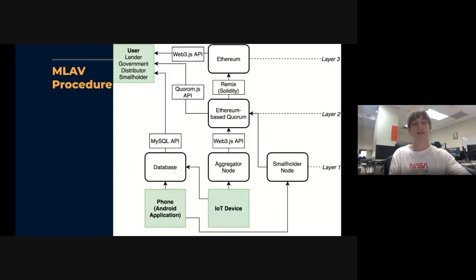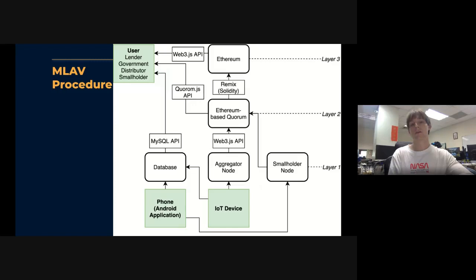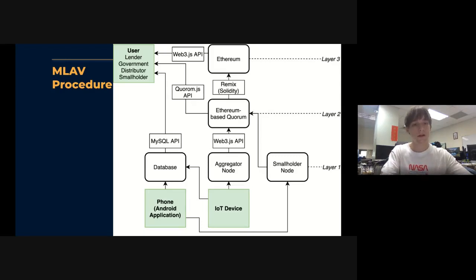The API implementation has three layers. Layer one contains smallholder nodes and aggregator nodes, as well as IoT devices connecting to the aggregator node, and an Android application. We use Web3 JavaScript API and Quorum JavaScript API — which handles Ethereum communications since Quorum is Ethereum-based. We also have a MySQL API for a database, since SQL (Structured Query Language) is very efficient for queries on a server or database.